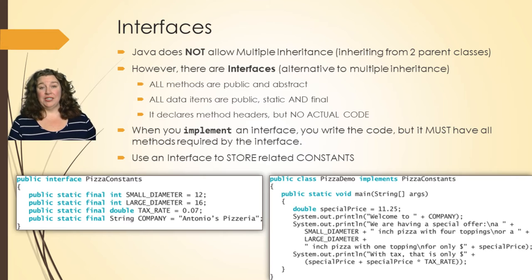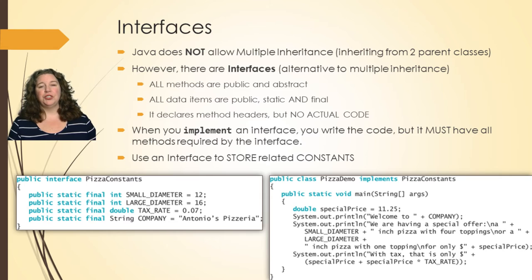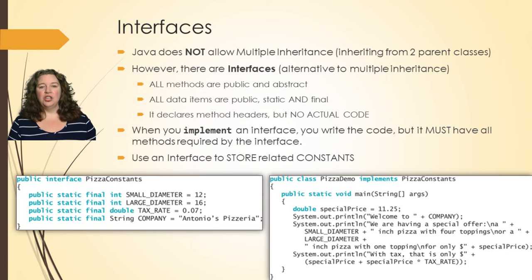When it comes to inheritance, Java does not allow multiple inheritance — you cannot inherit from two different parent classes, it just won't let you. So if you have inheritance, you only get one parent. However, there is a concept called interfaces, which is an alternative to multiple inheritance. You can have multiple interfaces inherited. Instead of using the keyword extends, we use the keyword implements, which only works with interfaces and not with parent classes.